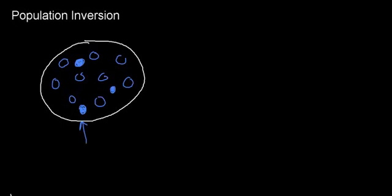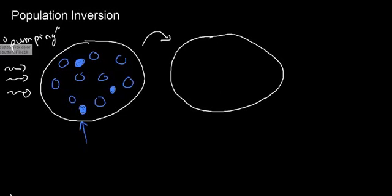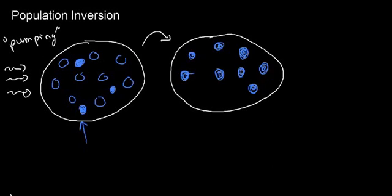What I want ideally is as many of these molecules excited as possible before I start the lasing process. What I can do is introduce a lot of energy to the system — this is called pumping. I can use an electrical charge or photons to pump. After pumping, I create a situation where most of my molecules are in the excited state, and only some are in the ground state. This is basically an inversion of the population.